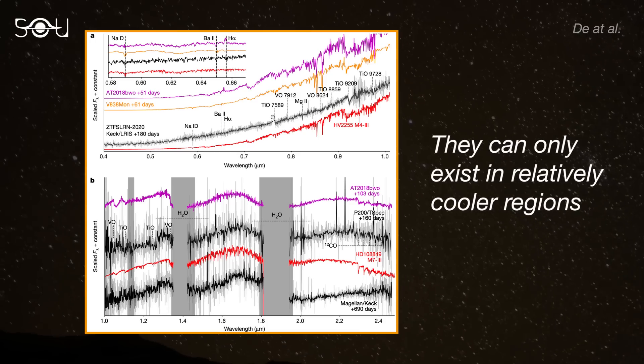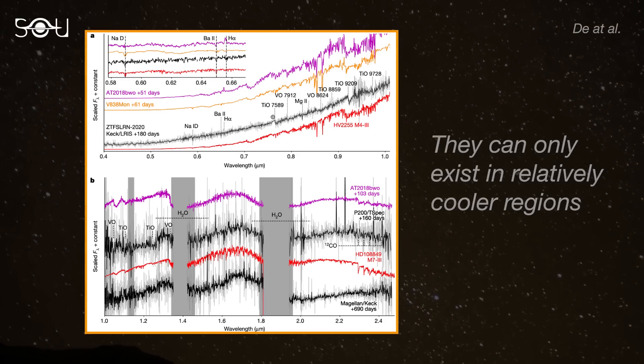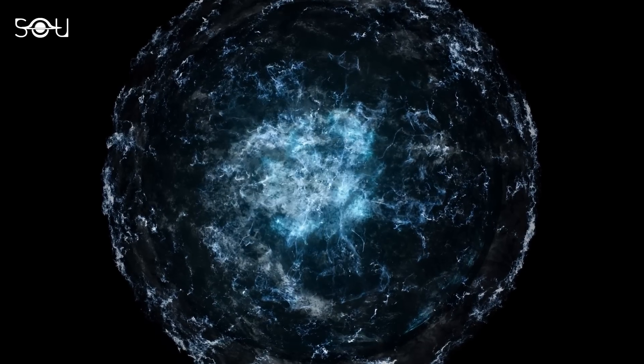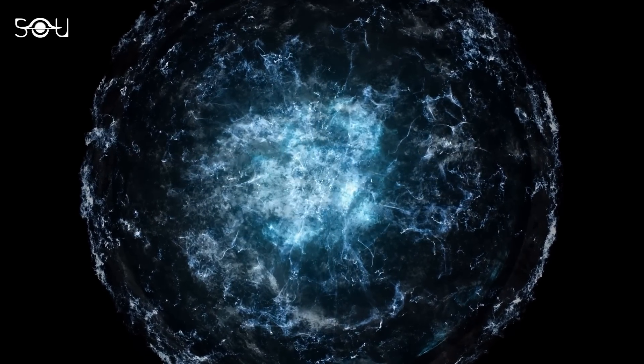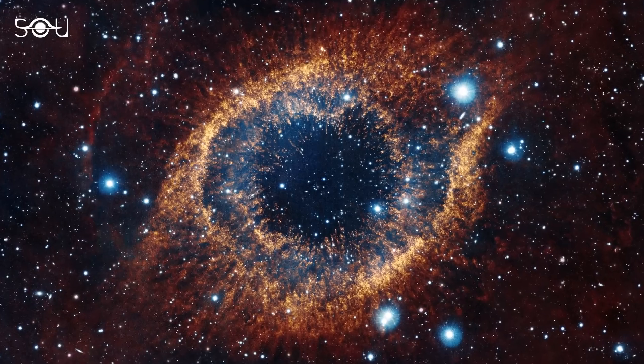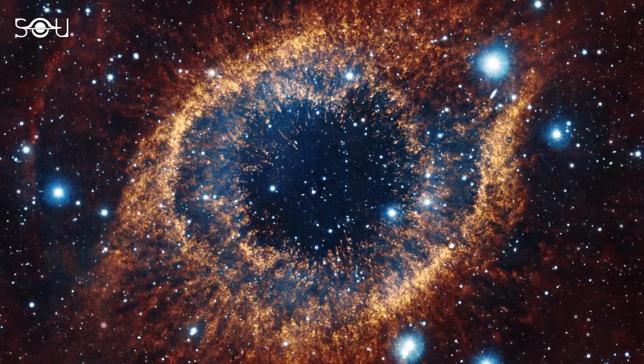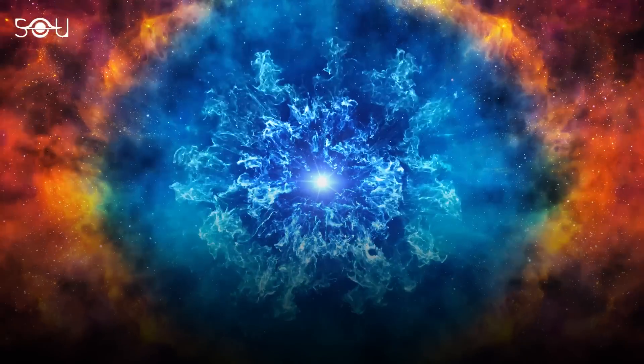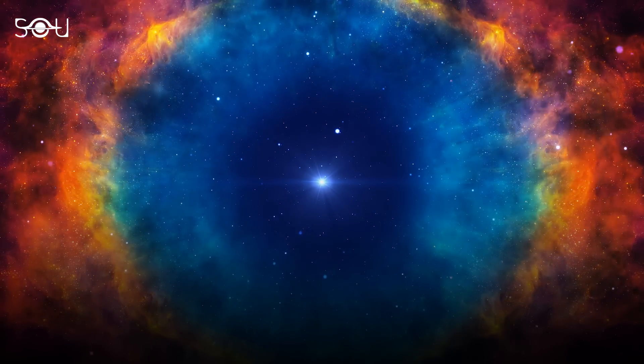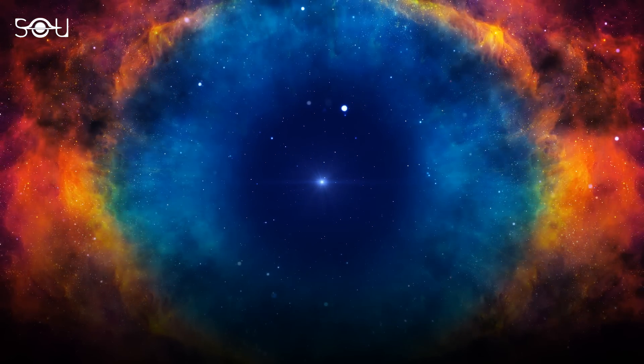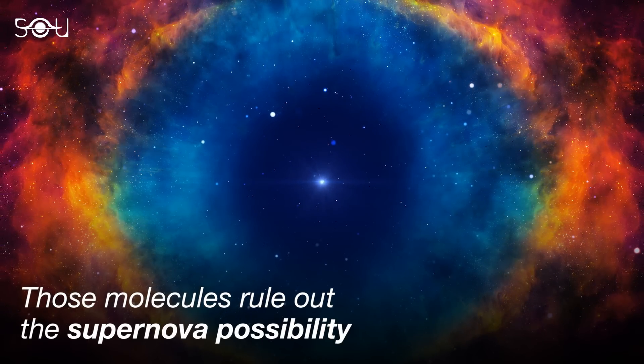These molecules can only exist in cool, M-type stars or extremely low-temperature regions. The infrared emission indicated rapid cooling because infrared light signifies cooler materials, while UV and optical emissions come from hot stellar plasma. However, in a supernova explosion, a star heats up and brightens. Thus, the presence of cool materials and a supernova explosion are contradictory, ruling out the latter.